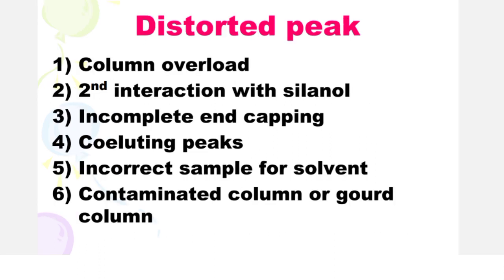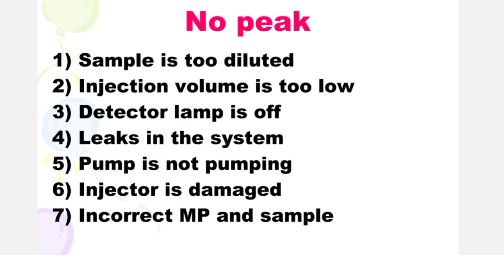Next is distorted peak. Distorted peak is due to when the column is overloaded, secondary interaction with silanol, incomplete end-capping, co-eluting peaks, incorrect sample solvent, and contaminated column or guard column.